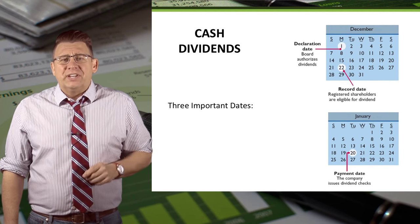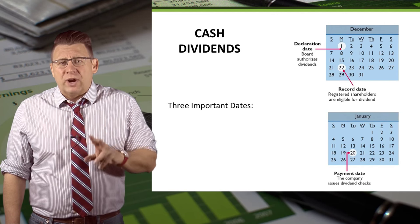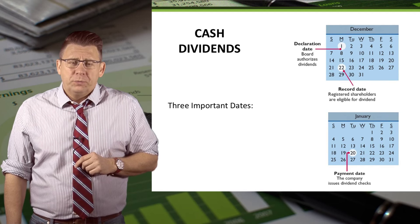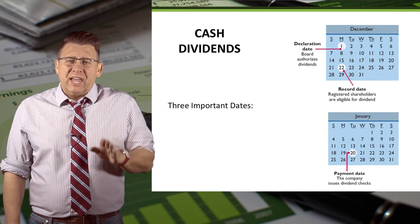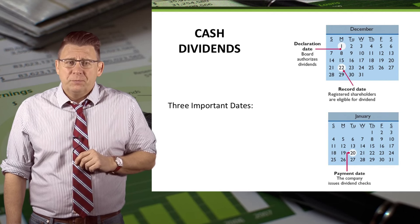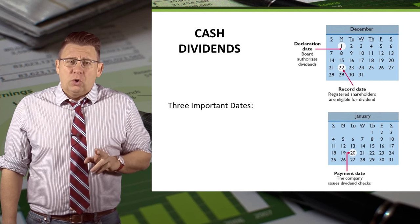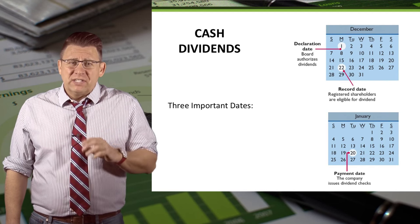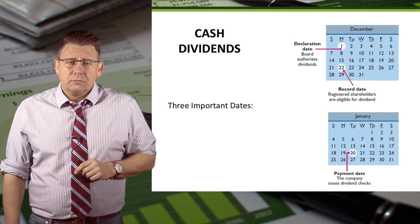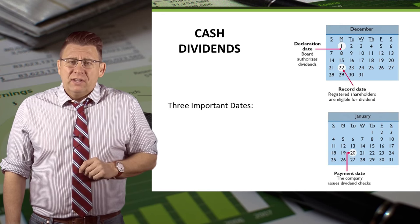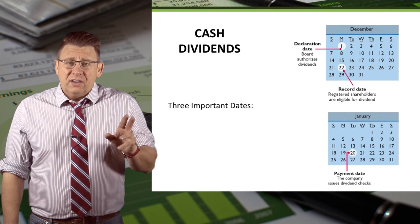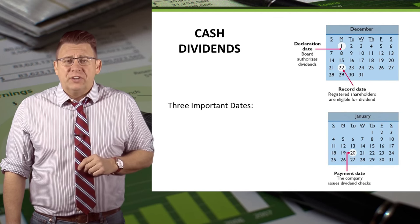The next important date is the date of record, which is usually a few weeks after the date of declaration. The purpose of the date of record is to establish which shareholders will receive a dividend — only shareholders at the close of business on the date of record receive a dividend. Finally, the date of payment is the day the dividend checks are mailed out, again usually a few weeks after the date of record.